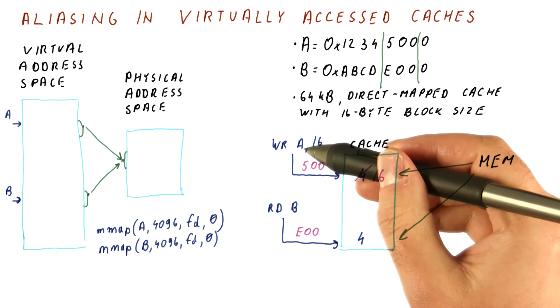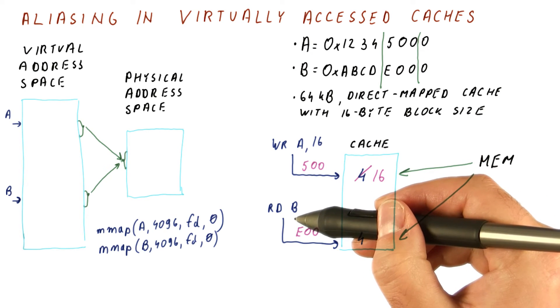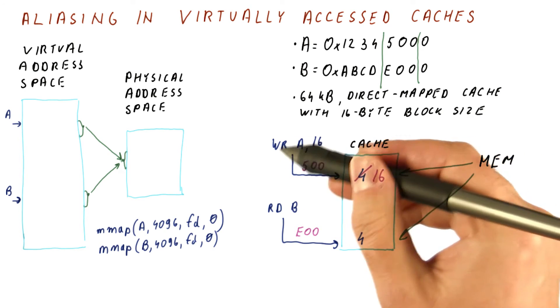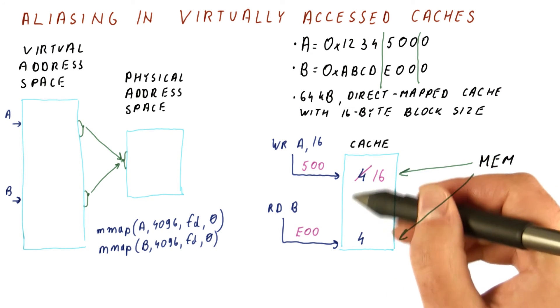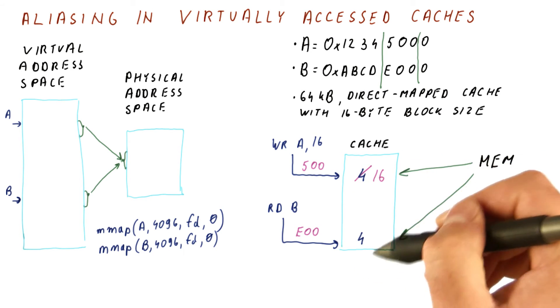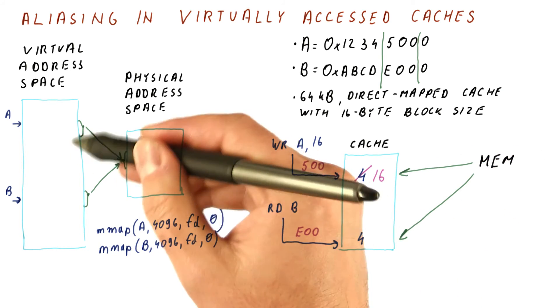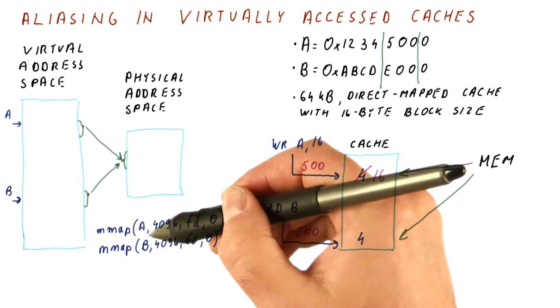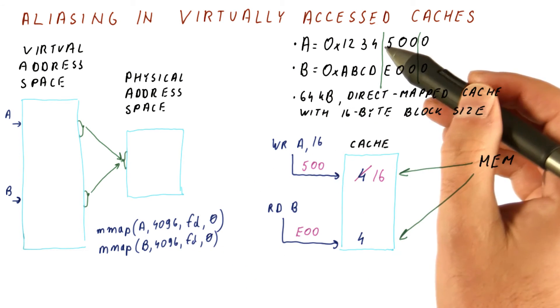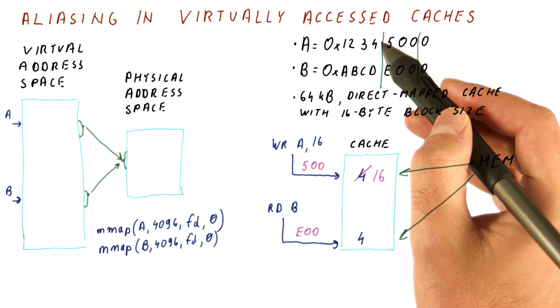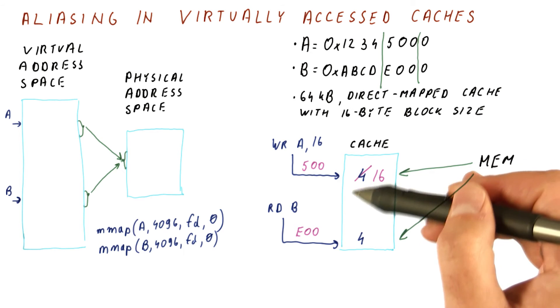What should have happened is because A and B are really the same data. When we write to A and read B, we should be getting the same data. And this problem results in incorrect execution whenever we have such a mapping. Unfortunately, such mappings are perfectly legal to do in most operating systems. So virtually accessed caches need additional support for this.